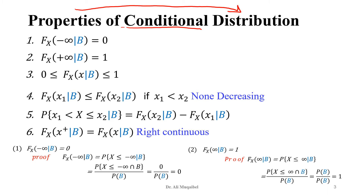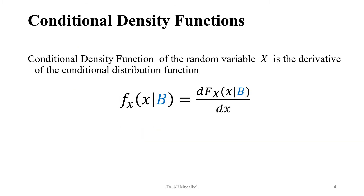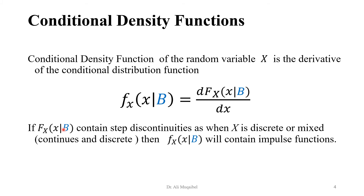This slide is just meant for completion to show that conditional distribution has all the valid properties. We can get the conditional density function in the same way. The relation between the PDF, the density function, and the distribution — it's obtained by taking the derivative. The conditional density function of the random variable X is the derivative of the distribution function. When you take the derivative, if your distribution has discontinuities, you expect that differentiating gives you impulses. This usually occurs in discrete or mixed random variables. So we have two cases where this could happen — discrete or mixed random variables — and you expect your conditional density function to have spikes or impulses.